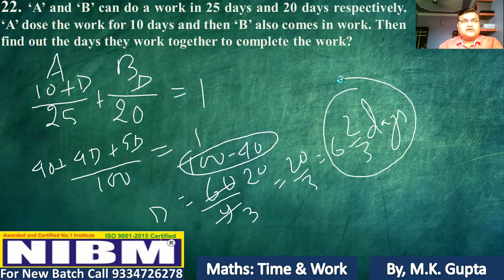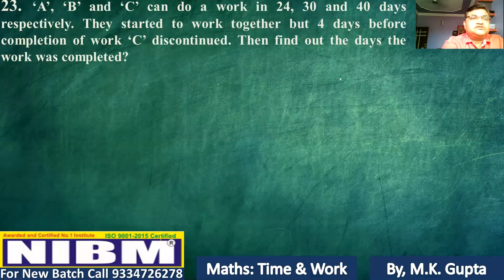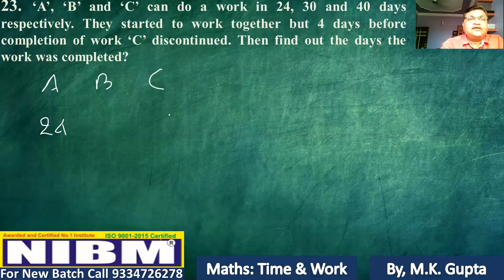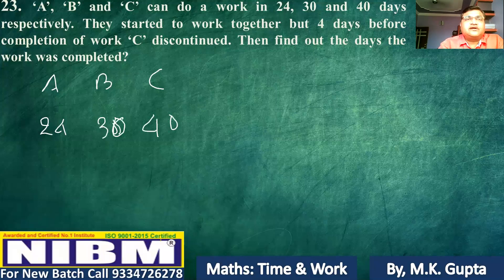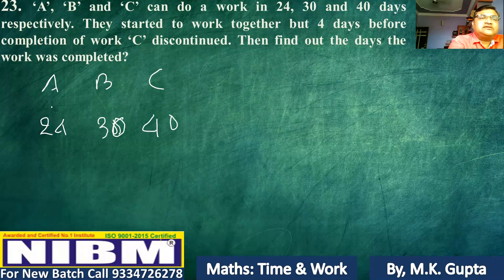Now let's talk about question 23. In question 23, you are seeing the same pattern of questions, but here A, B, and C can do the work in 24, 30, and 40 days. They start to work together, but four days before the completion, C is discontinued. Find the date when the work is completed.